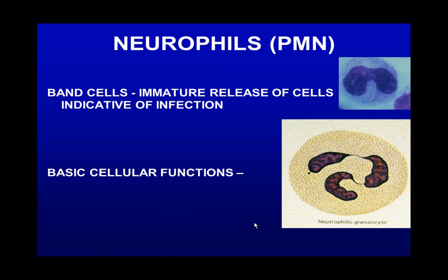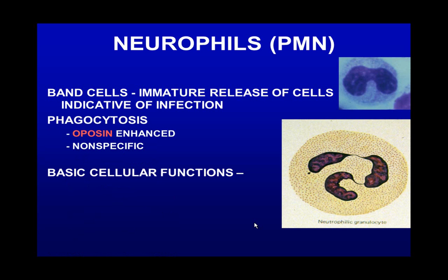Immature neutrophils, when they come out, are called band cells — a basic step just before the mature ones are released. But if there's an infection and you need more neutrophils, band cells will be released. They increase their phagocytosis by having items opsonized — in other words, antibodies attached to bacteria facilitate the bacteria being eaten by the neutrophils.